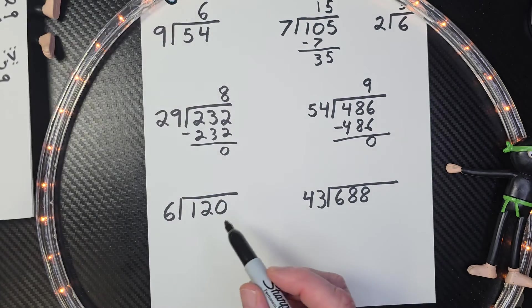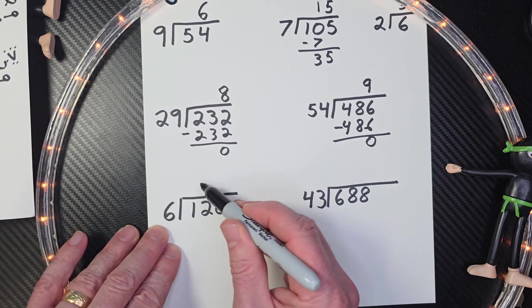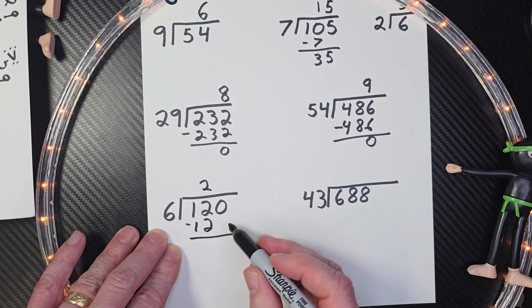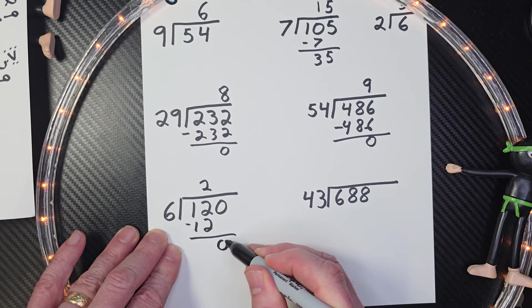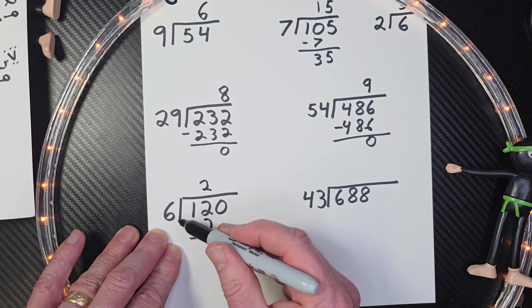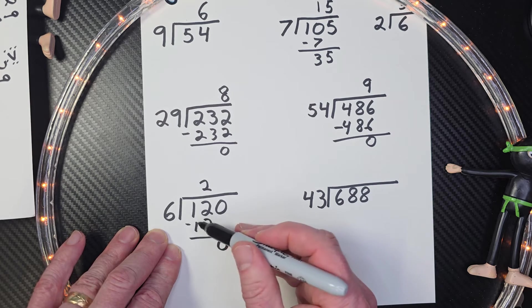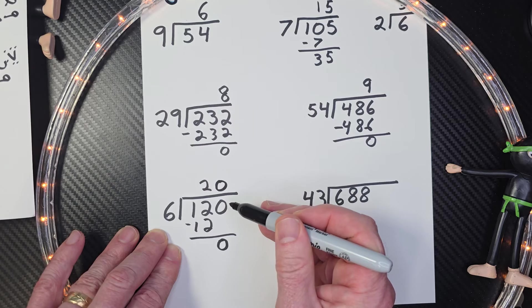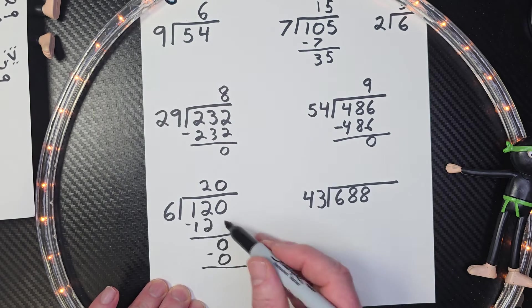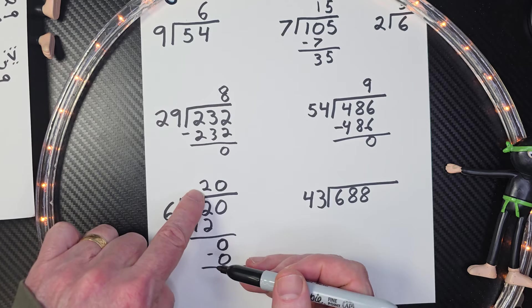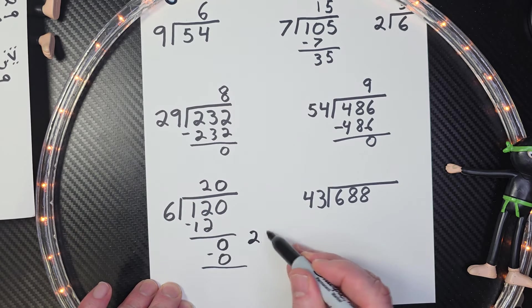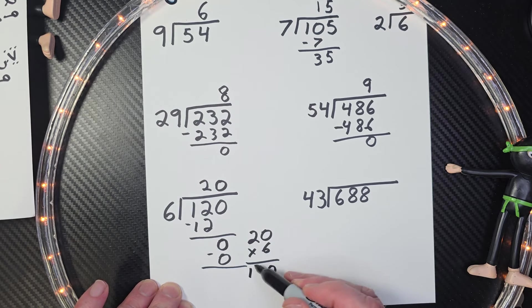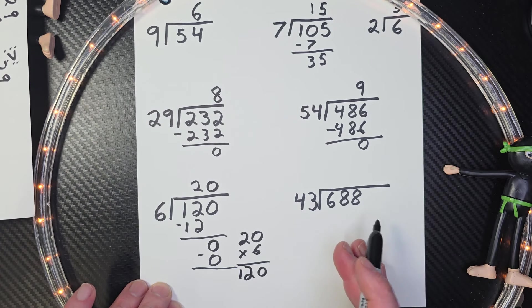How many times does six go into 12? Two times. Six times two is 12. Subtract. Bring the next number down. And then six times, how many times does six go into zero? Well, six times zero goes into zero. So there's our answer. And if you get a little confused on that one, you can always check your work. So you could take 20 times six. So six times zero is zero. Six times two, 120. Easy, cheesy, lemon squeezy.